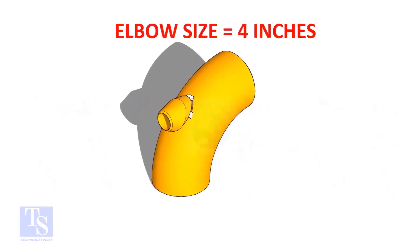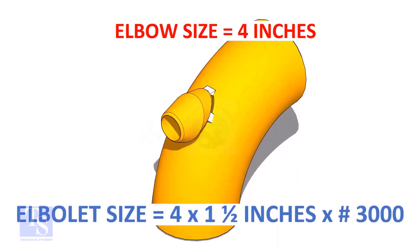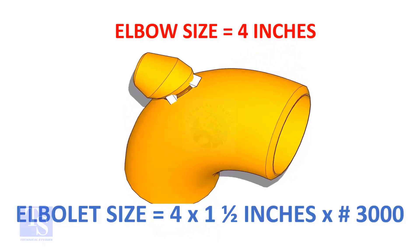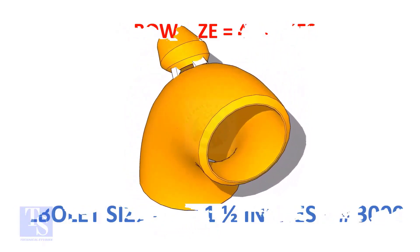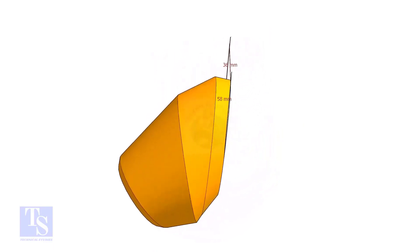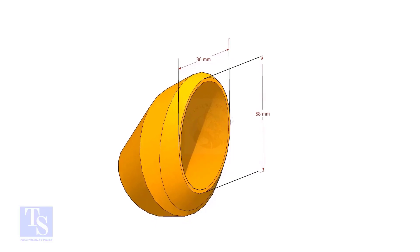The size of our elbow is 4 inch, and the size and rating of the elbowlet is 1.5 inch and 3,000 pounds respectively. The bottom opening size of the elbowlet is 36mm into 58mm. Please note down these dimensions.